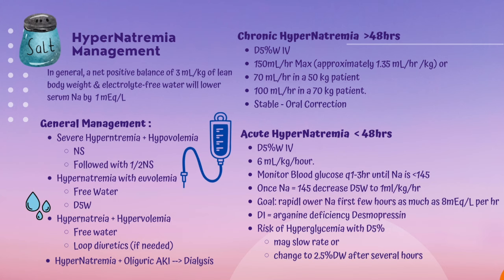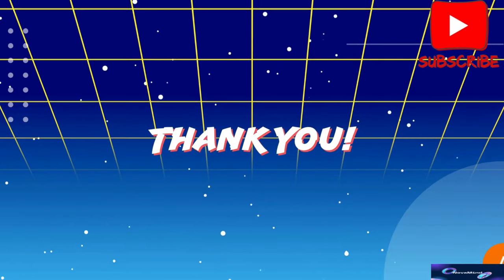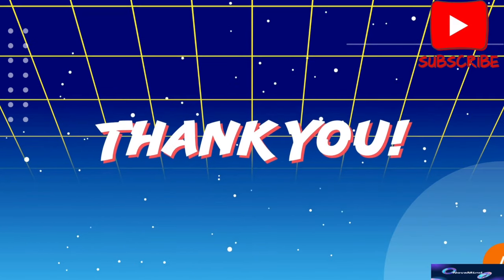Stable patients can do oral rehydration. For acute hypernatremia less than 48 hours, give D5W IV at 6 mL/kg/hour; monitor blood glucose every 1 to 3 hours until sodium is less than 145, then decrease D5W to 1 mL/kg/hour. The goal is to rapidly lower sodium in the first few hours — as much as 8 mEq/L per hour. For diabetes insipidus, desmopressin can be used. There is a risk of hyperglycemia with D5W; if needed, slow the rate or change to 2.5% dextrose after several hours. Thank you so much for studying with me today — see you at the next one, and don't forget to subscribe.